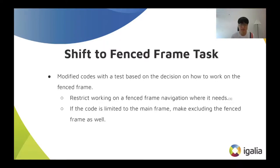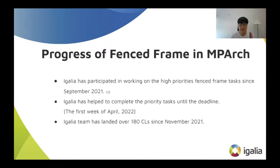If the code that is restricted to main frame should exclude fenced frame as well as iFrame, we have also excluded the fenced frame by checking the get-parent or outer-document method of the RenderFrame class. Regarding the progress of the fenced frame in MPH since the last BlinkOn, we have participated in working on the high-priority fenced frame task little by little since last September, and we started participating in the fenced frame task in earnest last October. We had to complete the priority tasks until the first deadline since then.